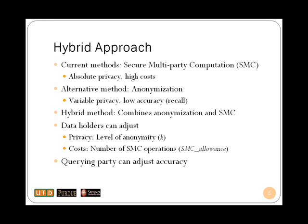We propose a hybrid approach that combines anonymization and SMC. In this method, data holders can set their own level of privacy by adjusting the anonymity requirement K. Data holders can also limit their costs by restricting the number of SMC operations. Similarly, the querying party can attain high accuracy by promoting low anonymity requirement and high SMC allowance.